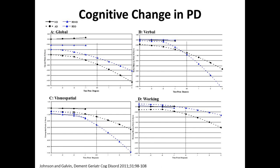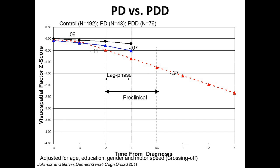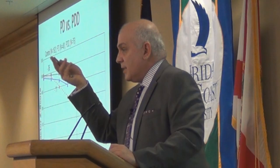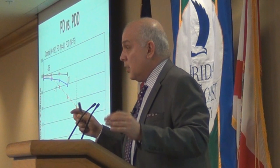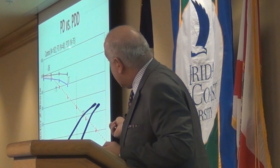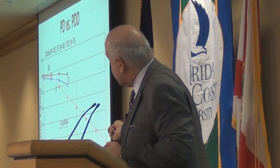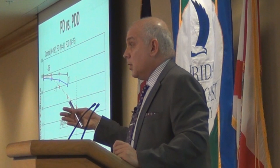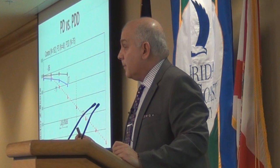We can do the same thing in Parkinson's disease — we can see the difference in domains. Looking at Parkinson's disease versus controls versus Parkinson's dementia on the visual spatial skills domain — hand-eye coordination, depth perception, construction — we can see that the PD dementia group started to change about three years before diagnosis, but the PD group started to change also, which meant that if those people had lived longer, they might have developed dementia.